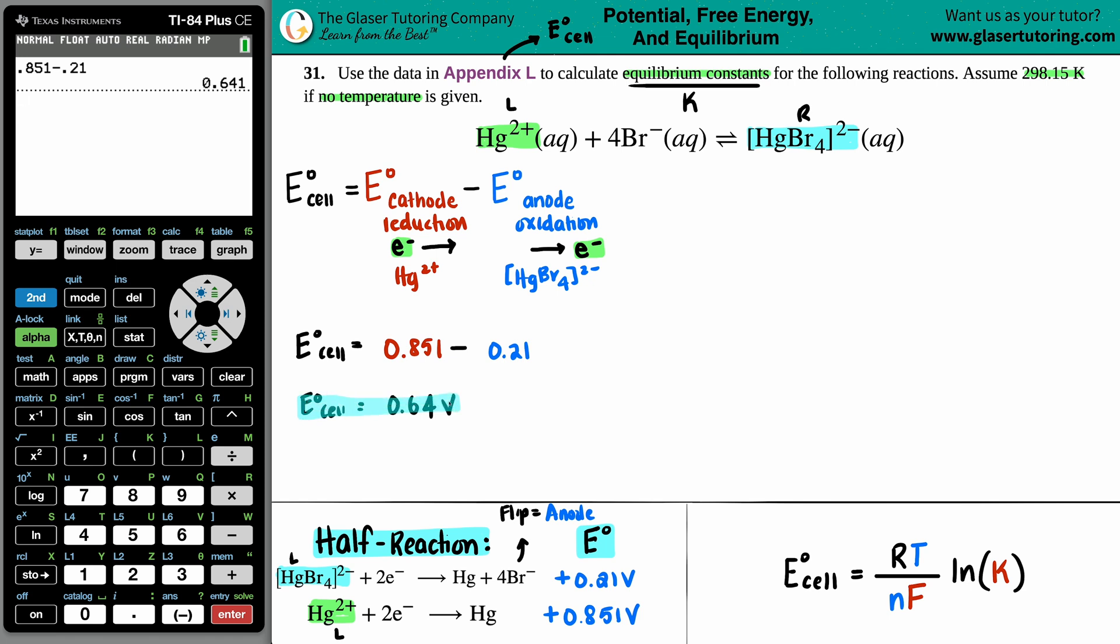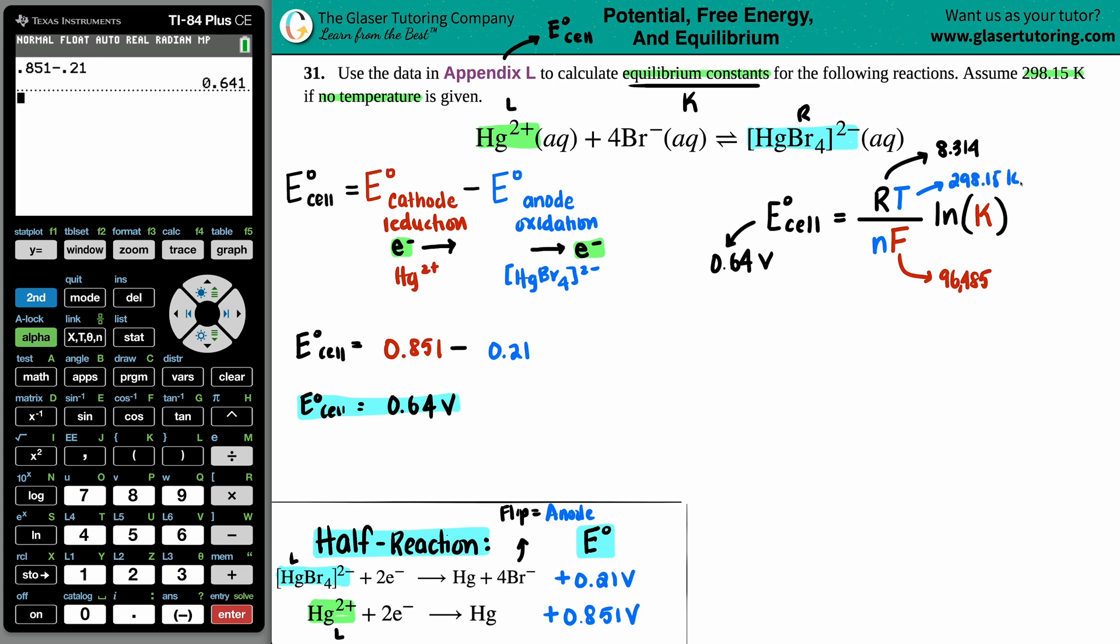So now we have my E cell value. So I can now go over to the next formula. My E cell is 0.64 volts. And now I just need to know what RT and NF are. R is a constant value here. So whenever you're using this formula, you're using 8.314. F is also a constant, so you got two constants here. F is Faraday's constant, that's 96,485. Temperature has to be in Kelvin. And they told us that if no temperature was given, we're going to use the 298.15 Kelvin. And then the N value is the number of moles, specifically of electrons, because we're talking about oxidation reduction reactions, specifically electrons that are transferred.